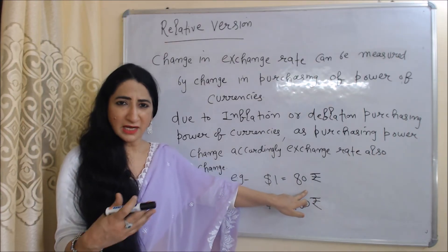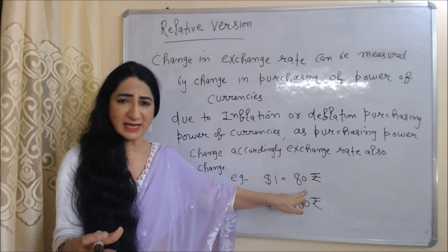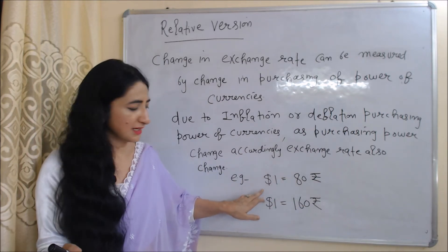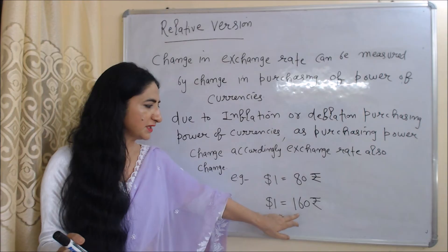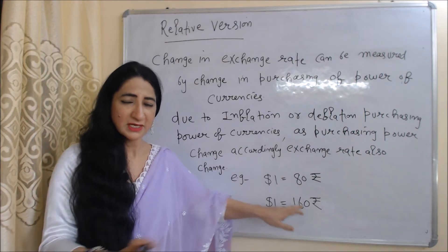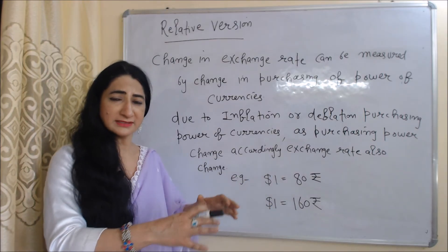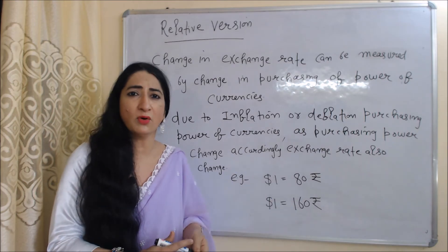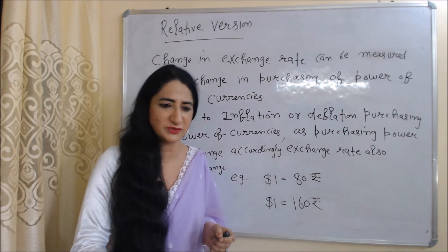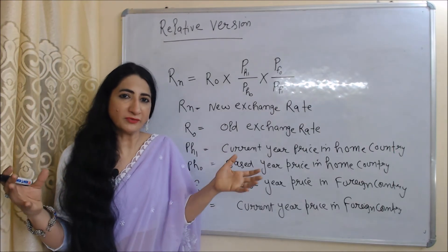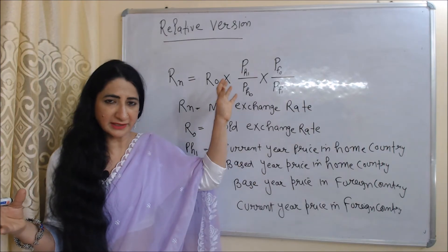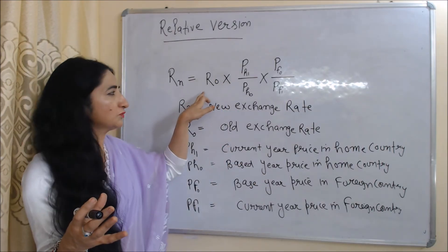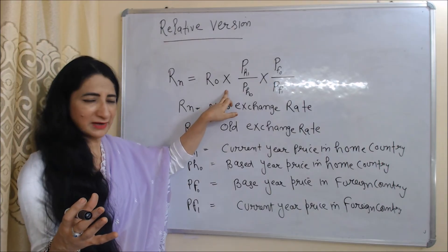For example, suppose 1 dollar is equal to 80 rupees. Now suppose the price level has become double in India but remains the same in the USA. Then 1 dollar will become equal to 160 rupees. Here you can see that as the purchasing power of currency changes, the exchange rate will also change.